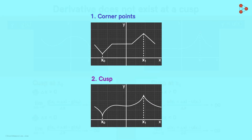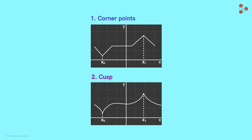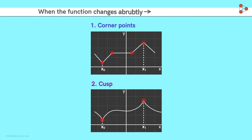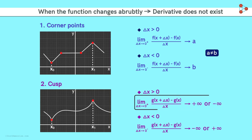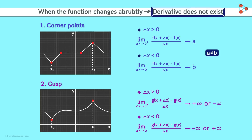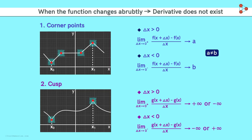Until now, we have seen two different types of sharp turns when the function changes abruptly. One is a corner point like this, and the other is a cusp. We saw that the derivative at these types of points does not exist. In the case of a corner, we get two different tangents with a finite slope. And in the case of a cusp, we get two different tangents with infinite slopes. In short, the derivative of these points does not exist because we cannot find a straight line by which we can approximate the graph of the function around that point.